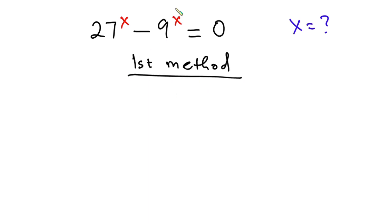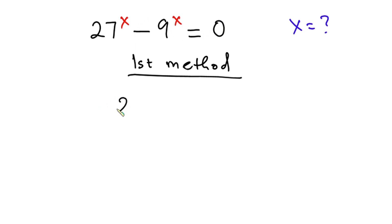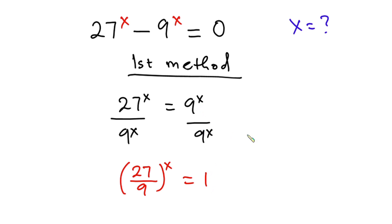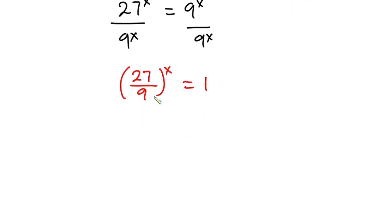From this method, let's move the negative 9 to the power x to the right hand side, so that the equation will be 27 to the power x is equal to 9 to the power x. Then let's divide each side of the equation by 9 to the power x. The left hand side can be written as 27 divided by 9, all to the power x, and this equals 1, because any number divided by itself is 1. Since 27 divided by 9 is 3, we have 3 to the power x is equal to 1.